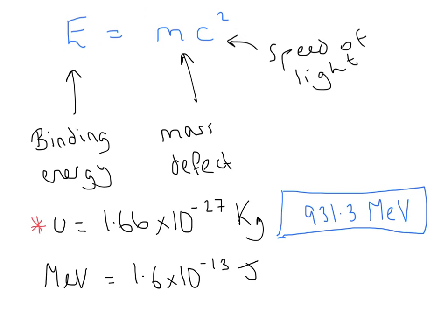But what we also know is that a mass defect of one U would be equivalent to binding energy of 931.3 mega electron volts. And that's a really useful conversion to use rather than having to flip through using your E equals MC squared equation. You can just use this nice conversion relationship where one mega electron volt is 1.6 times 10 to the minus 13 joules.